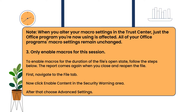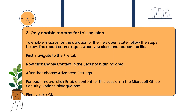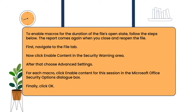Method three: only enable macros for this session. To enable macros for the duration of the file's open state, follow the steps below. The prompt appears again when you close and reopen the file. First, navigate to the File tab. Now, click 'Enable Content' in the Security Warning area. After that, choose Advanced Settings. For each macro, click 'Enable Content for this session' in the Microsoft Office Security Options dialog box. Finally, click OK.